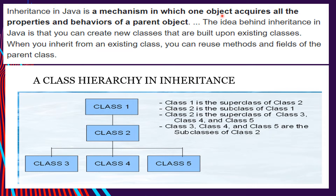Inheritance is the capability of a class to use the properties and methods of another class while adding its own functionality — inheriting the characteristics of the parent class by the child class. For example, class 2 is an employer record system with a generic employee class with states and actions common to all employees.